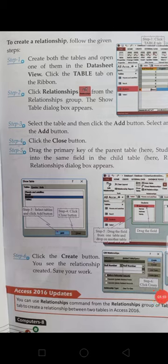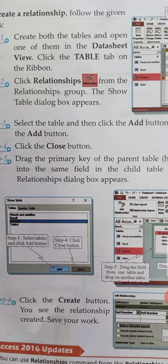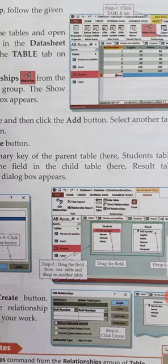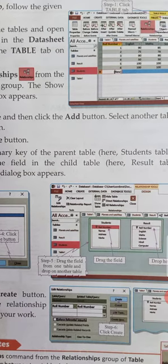To create a relationship, follow the given steps. First, create both tables and open one of them in the database view. Click the Table tab on the ribbon. Click Relationship from the Relationship group — the Show Table dialog box appears. Select the table and then click the Add button. Select another table and click the Add button again.